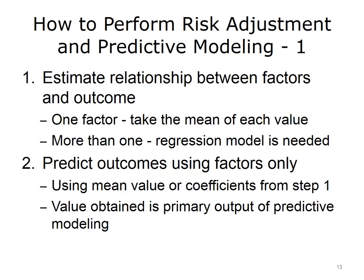The basic process of risk adjustment and predictive modeling can be summarized in four steps. Step 1: estimate the relationship between the factors and the outcome. If there is only one factor, such as sex, with two values — male and female — the mean outcome level for each value will work. If there is more than one factor, a regression model is needed.